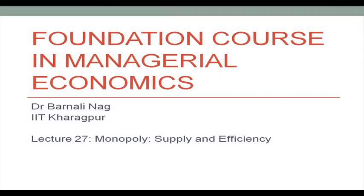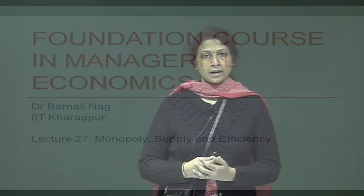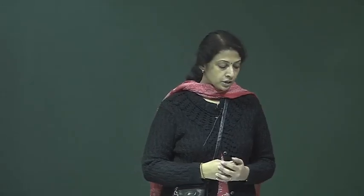Hello and welcome back to our discussion on Monopoly. Till the last class we discussed how a firm attains monopoly status, then we went on to see what is the equilibrium level of price and output that the monopolist decides. Today we are going to look at monopoly supply — does the monopolist have a supply curve like the perfectly competitive firm?